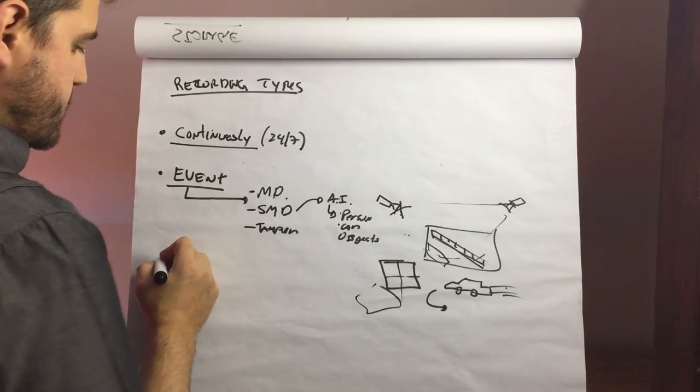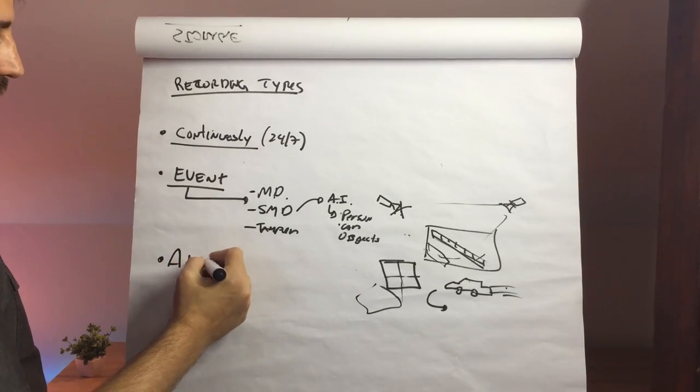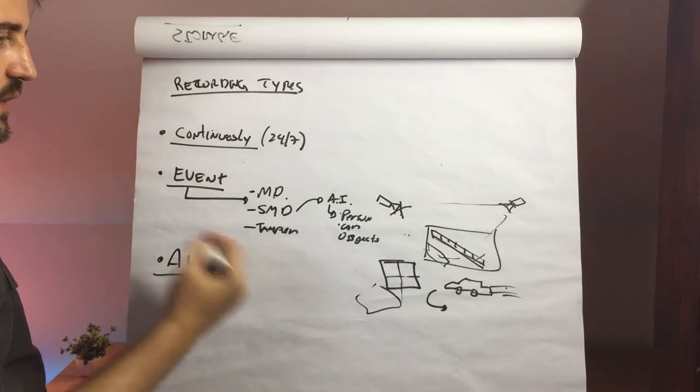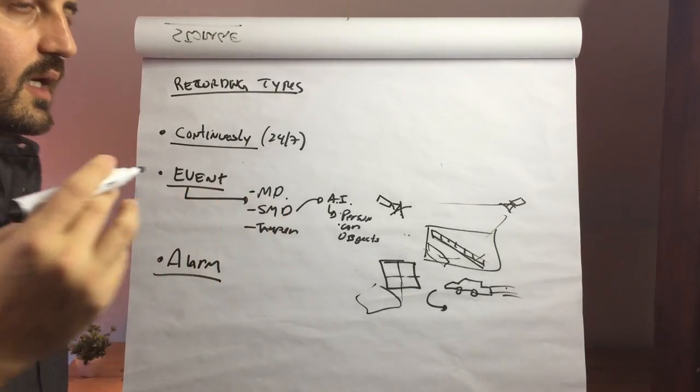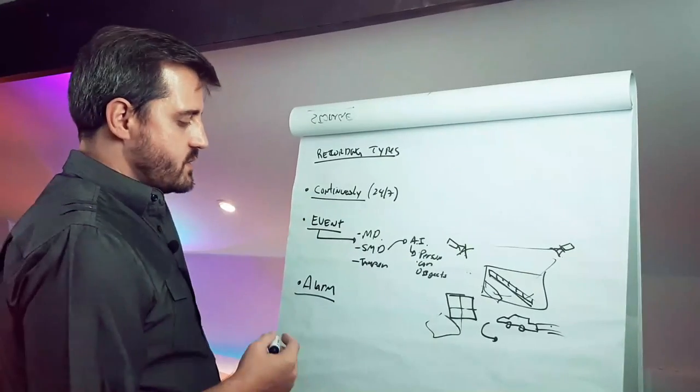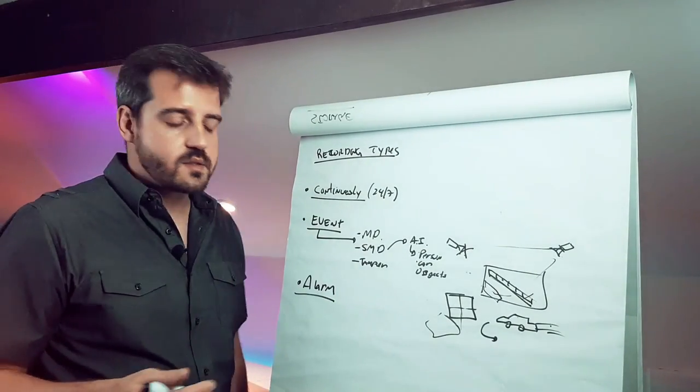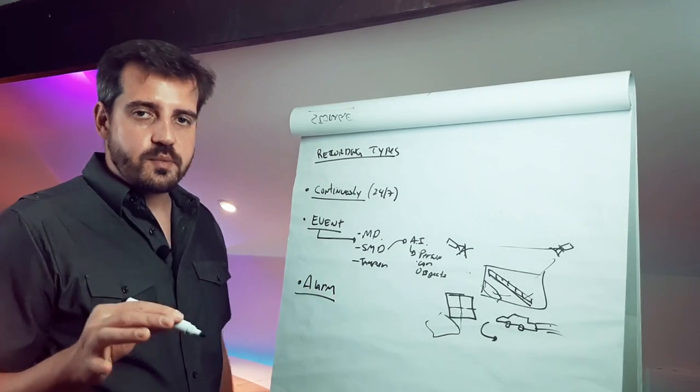Okay, and the last part is alarm. We have, we saw this in the other class. We have the alarms in the cameras. We have the alarms in the NVRs. So we have the alarms input and outputs.